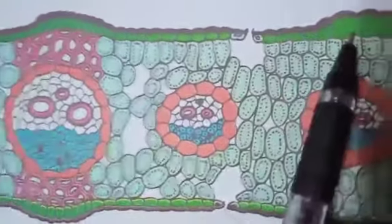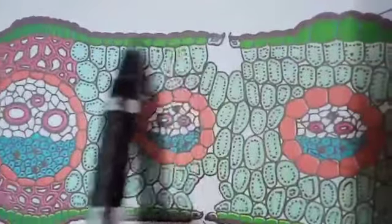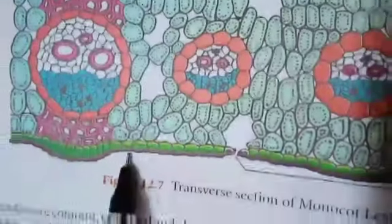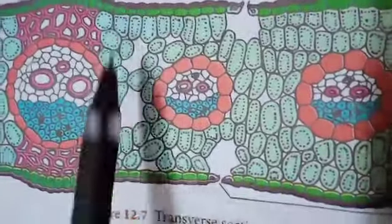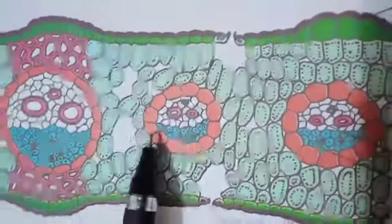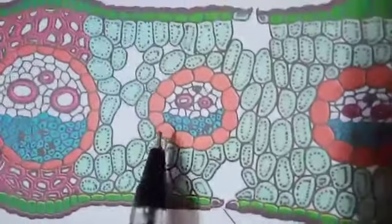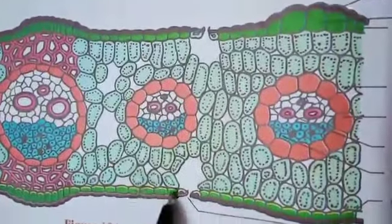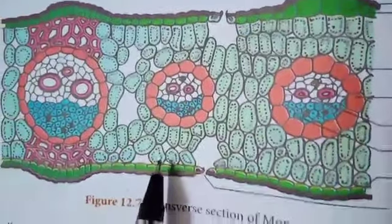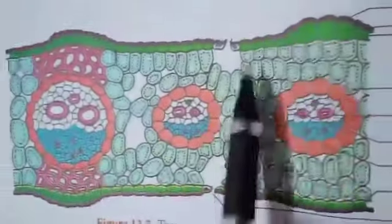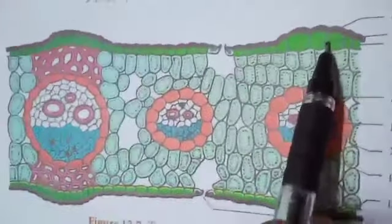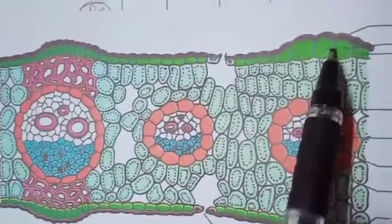Cuticle is present on both outer walls. Stomata are present in both upper and lower epidermis. Some cells of the upper epidermis are large and thin-walled; they are known as bulliform cells.